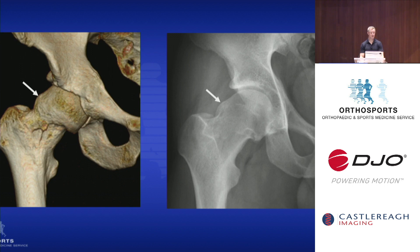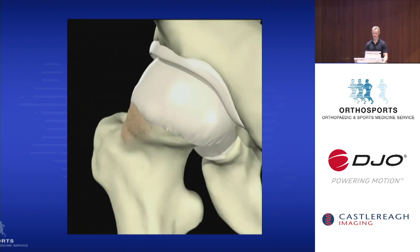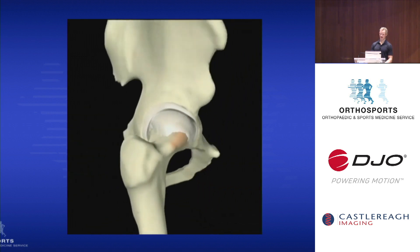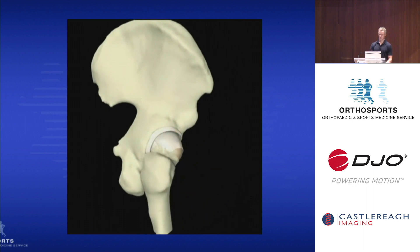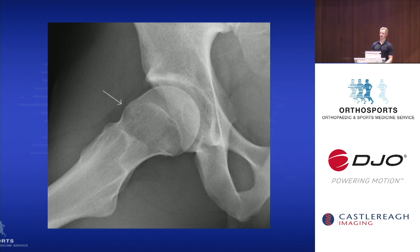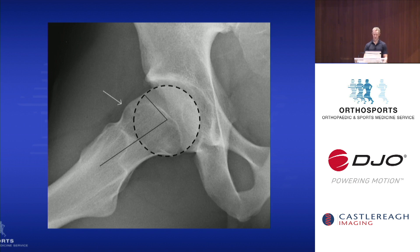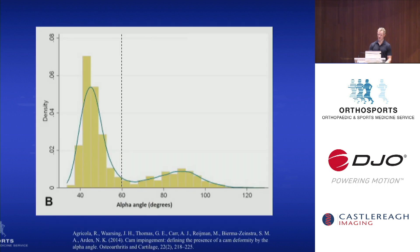CAM lesions, however, are a completely different beast. You can see the bump on the anterosuperior aspect of the femoral neck, characteristic of a CAM lesion. These bumps cause a loss of sphericity of the femoral head and can damage the labrum and articular cartilage when moved into the joint, essentially causing osteoarthritis of the hip. CAM deformities are measured on X-rays using the alpha angle — a line connecting the centre of the femoral head and neck intersected with a line drawn to where the bump begins. Any alpha angle over 60 degrees is likely to be pathological.